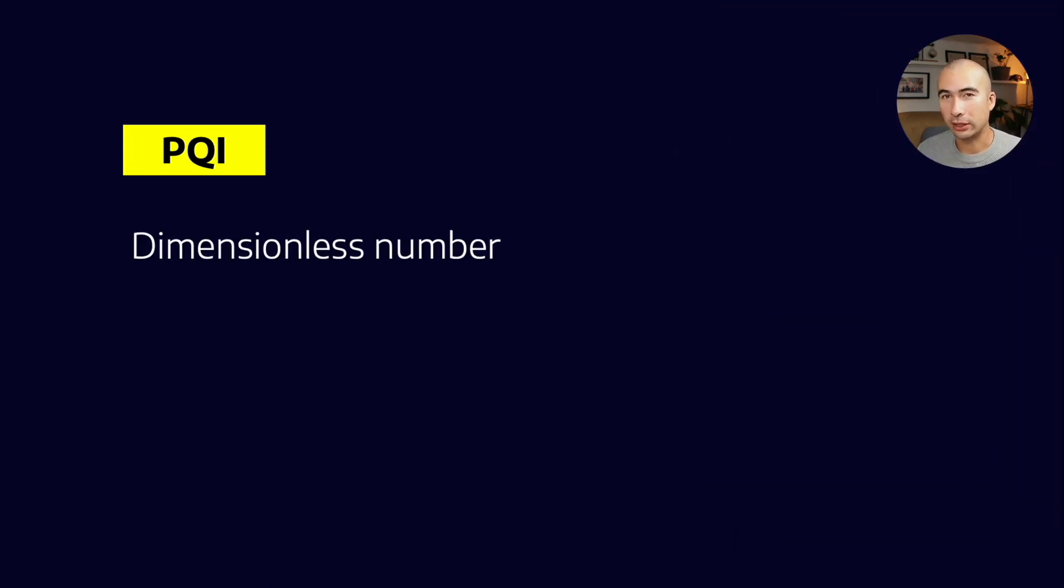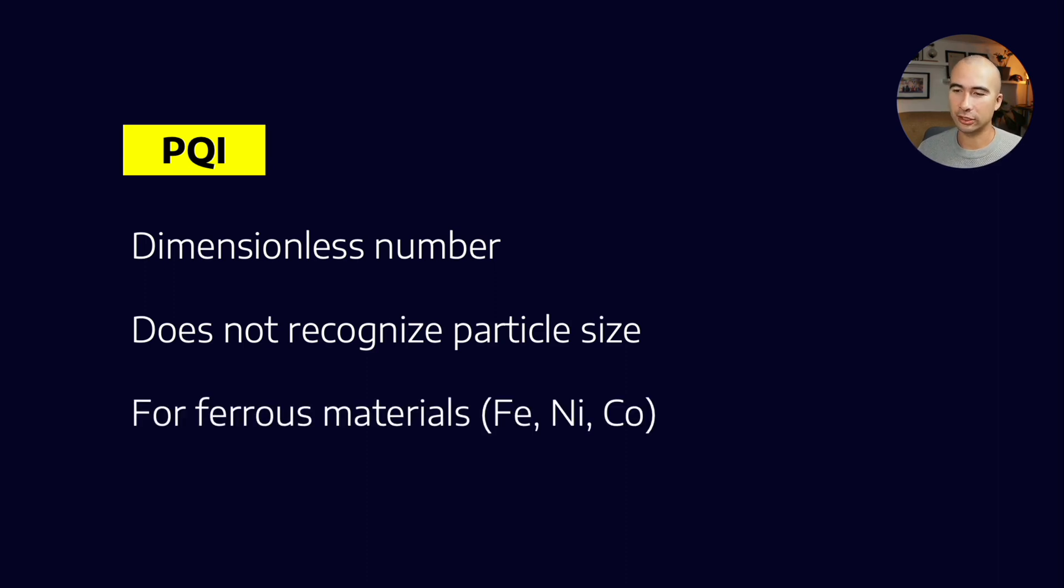So the PQ index, the things to know is that it's a dimensionless number, it doesn't recognize particle size, and it's a test specifically for ferrous metals: iron, nickel, and cobalt. Fortunately, we don't see much nickel and cobalt in either our formulations or in our equipment. So generally, what we say is that the PQ is just a proxy for the ferrous content, that is the iron content of an oil sample.